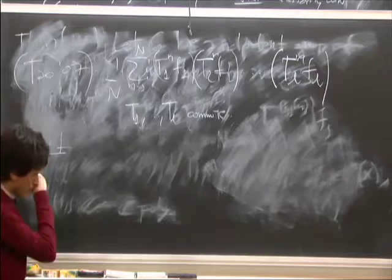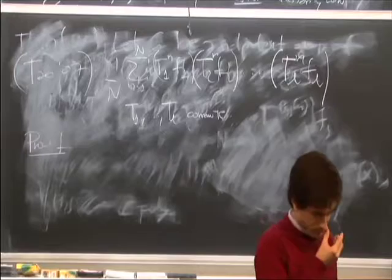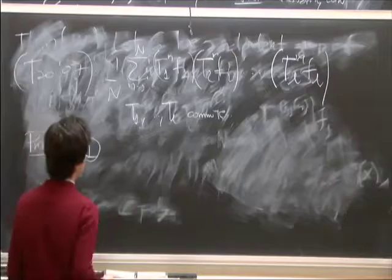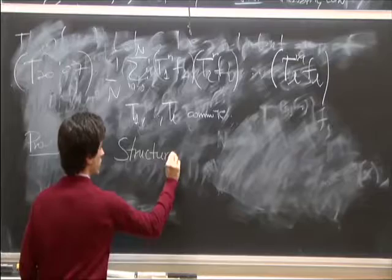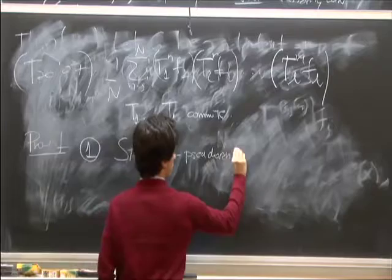For the remaining time, let me discuss the proof—how the proof goes for the general result. The proof has three steps. The first one is a very classic step: it's called the structure-versus-randomness decomposition.